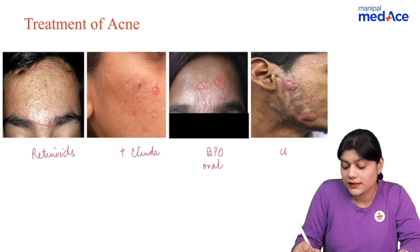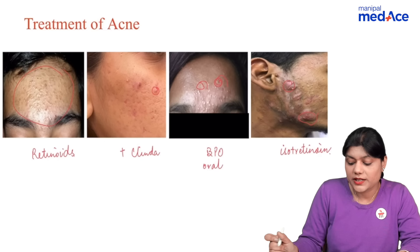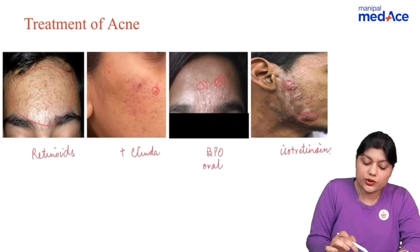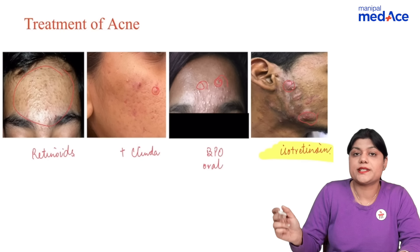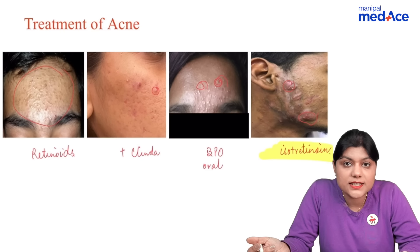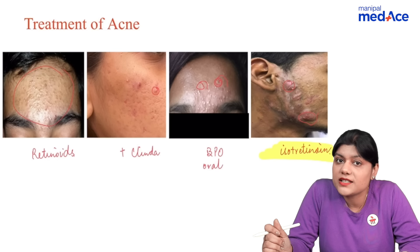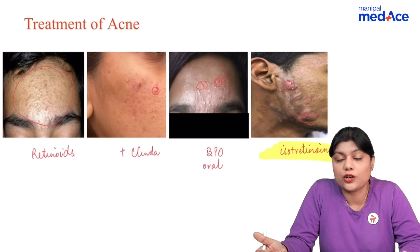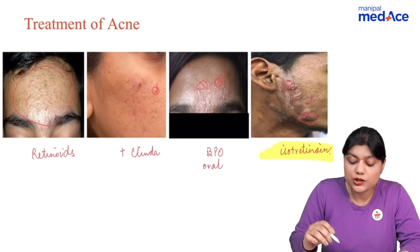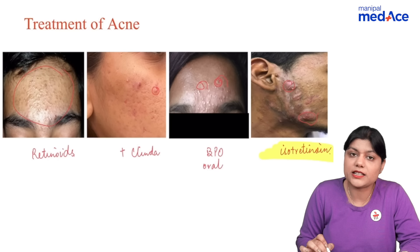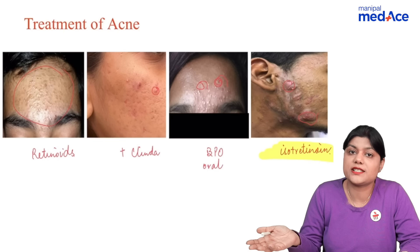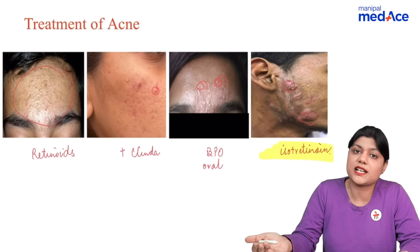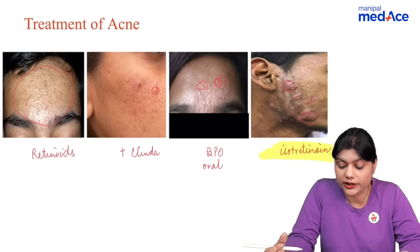The drug of choice is isotretinoin. Remember that isotretinoin is the drug of choice for nodulocystic acne and for resistant cases of acne — also for resistant cases of pustular acne. If a patient with pustular acne is not responding to doxycycline or azithromycin, then we can start the patient on isotretinoin.